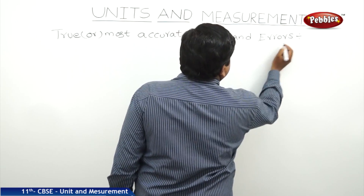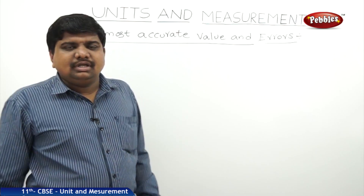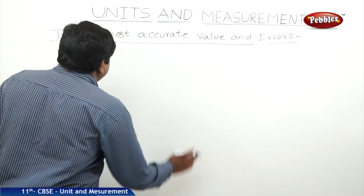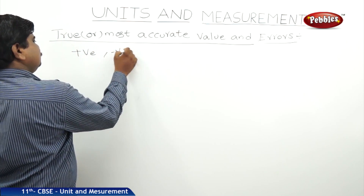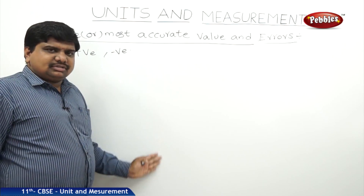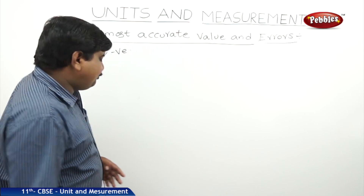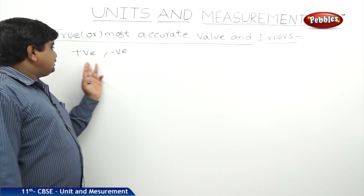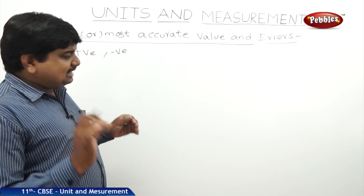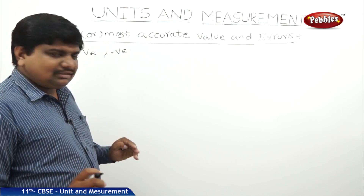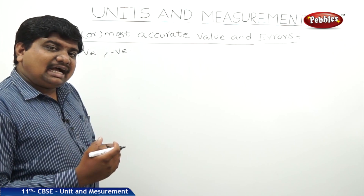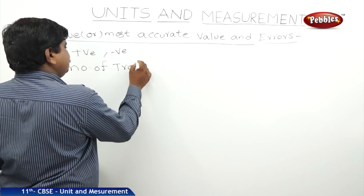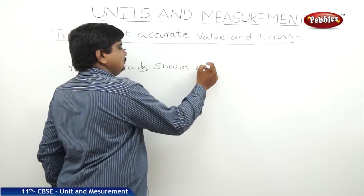We can write this as errors. What is the meaning of true or most accurate value? While repeating the experiment several times, the arithmetic mean's absolute error may be positive or negative. Over some 6 trials, we get an average value. If we subtract each individual value from the average, we get the absolute error. To eliminate this, the best way to get the true or most accurate value is to find the average output. If the number of trials is more than 8, we get the most accurate answer.